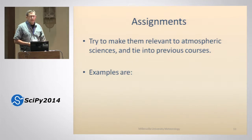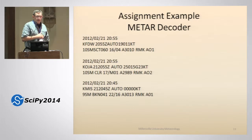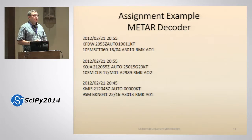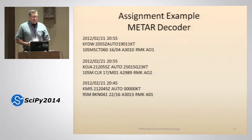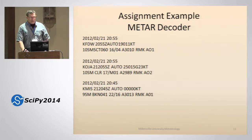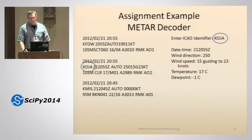An example of assignments in the Python course: we try to make them relevant to other atmospheric science classes. One example is a METAR decoder. METAR is the code that weather observations from around the world are coded in for transmission, particularly for aviation use — it's very cryptic. Students write a decoder using regular expressions to search through a file with thousands of observations, identify the right station, decode it, and print it out in plain English format.